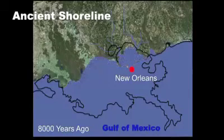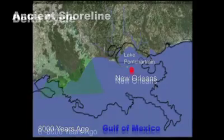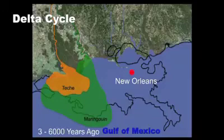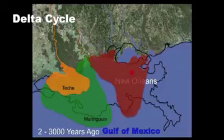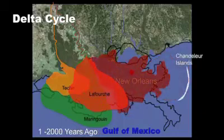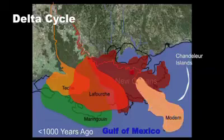Sea level continued rising, forming a bay that would ultimately become Lake Pontchartrain. Sea level rise then slowed and the river began building up sediments along the coast — scientists called these deposits delta lobes. Additional delta lobes were formed as the river switched from east to west and back again. When the river switched to a new course, the abandoned lobe began to deteriorate, a process that caused formation of barrier islands.